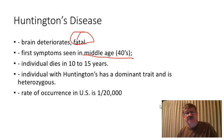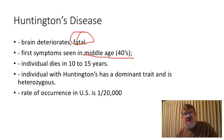That means the person is completely normal until sometime in their 40s, which means they very likely could have had children and passed this on to the next generation. In Tay-Sachs, the person who has the disease did not pass it on — it was passed on by carriers. Here in Huntington's disease, the person who has the disease passes it on to the next generation.